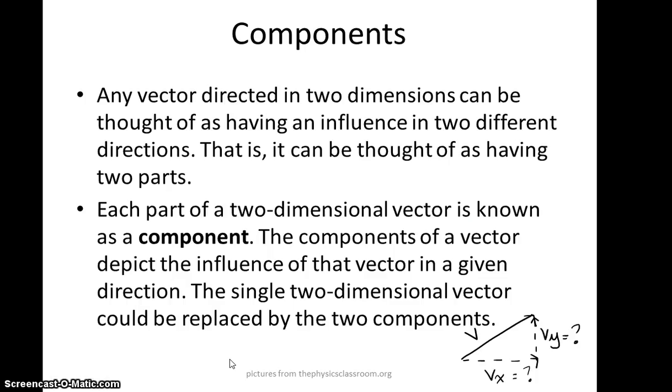So any vector that's directed in two dimensions can be thought of as having an influence in the x direction and an influence in the y direction. And so what I've done here at the bottom is I've drawn in this vector, let's call it v. This vector v can be substituted with two vectors, one in the x direction and one in the y direction, and we call these components. So for every two-dimensional vector, we can break it down into its x part or x component and its y part or y component.